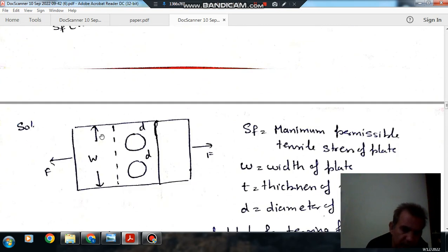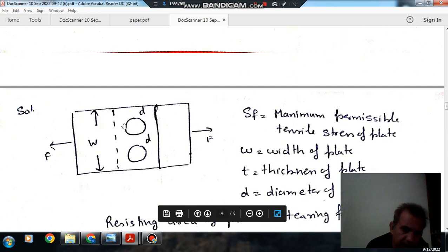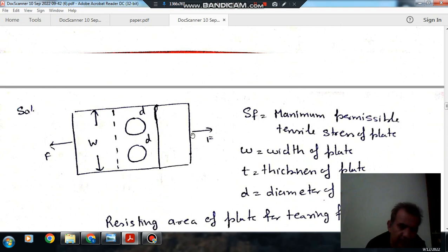So these are the two rivets and this is width of the plate. So we can say that if a tensile load F is applied, then the area responsible for failure of the plate is this part, this part and this part.